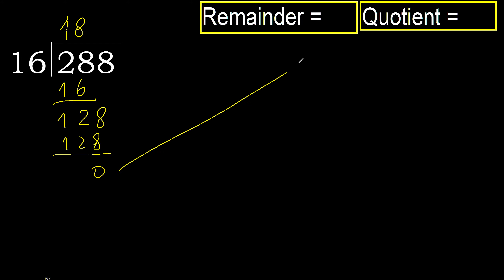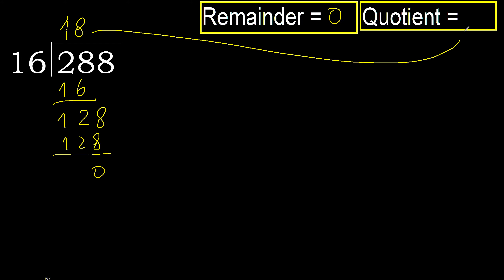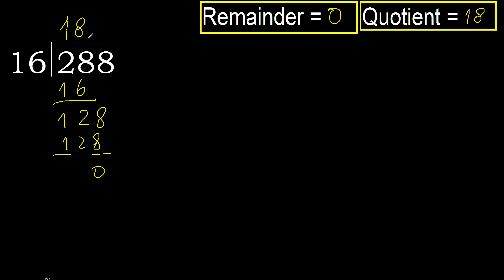Therefore finish. 288 divided by 16 is 18. Ok.